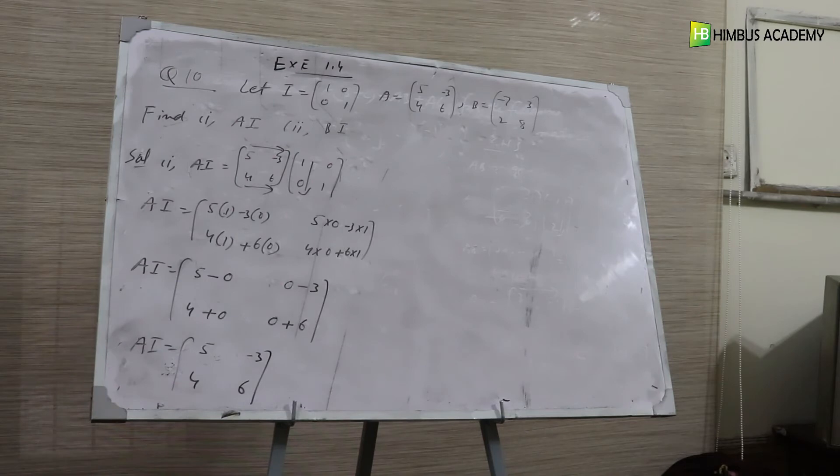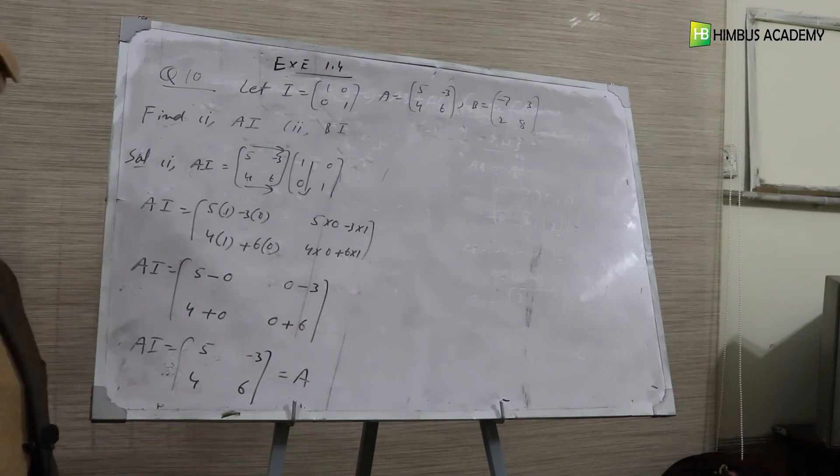If you look carefully, A, I gives us back A. This is equal to A. This means if we multiply the identity matrix with any matrix, we get the same matrix as the answer.